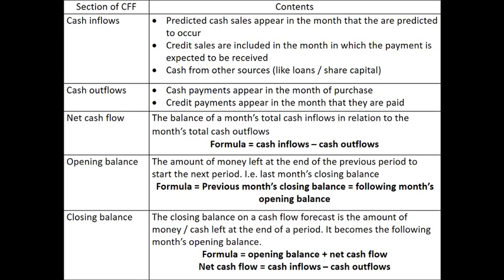The cash flow forecast might look complicated but there are five main sections, usually appearing in this order. First, cash inflows — including expected sales revenue and bank loans, recorded in the month you expect to receive them. Second, cash outflows — things like wages, recorded when cash actually leaves the business. Then you get a total inflow and total outflow, so you know exactly how much money you're predicting will come in and go out.